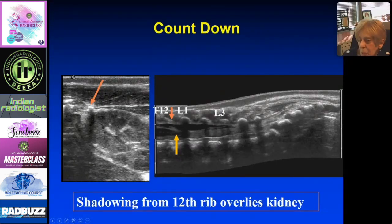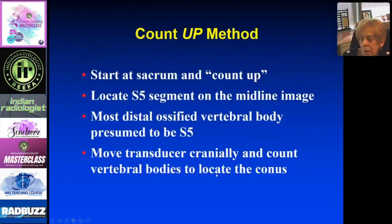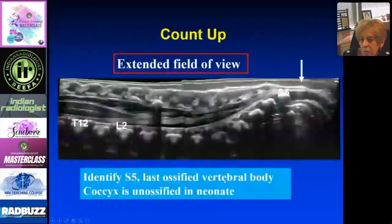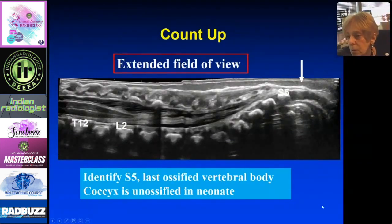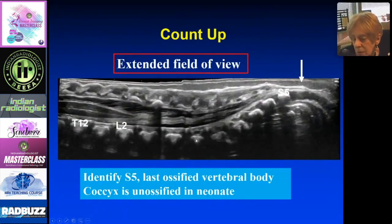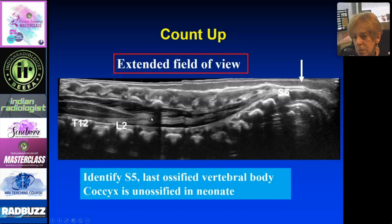Counting down is not a terribly reliable method. The preferred method is to count up — start at the sacrum and count up. Locate the S5 segment, which is the last ossified segment, and then count up through the vertebral bodies. This is where you need your extended field of view transducer to lay out the entire cord. The coccyx doesn't ossify, so S5 is last. Counting up: S4, 3, 2, 1, then lumbar 5, 4, 3, 2, 1, T12. In this example, the conus is somewhere between L2 and L3.